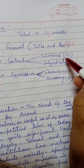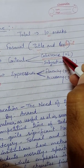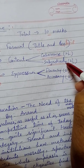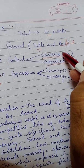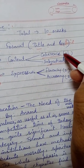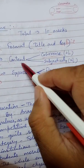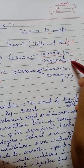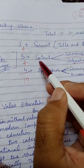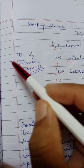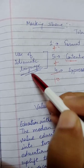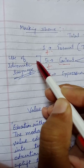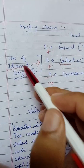The next five marks are for content. The division is 2.5 for coherence and subjectivity — meaning the sequence and organization of the examples and content you provide. Coherence is 2.5 marks and subjectivity is 2.5 marks. In this content section, the most important part is the use of idiomatic language. You should use idioms to support your points.